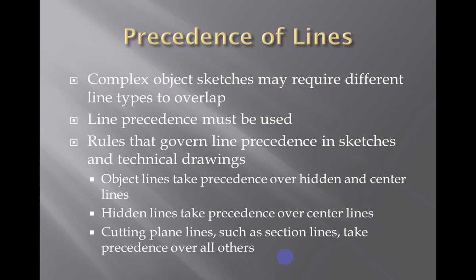There are some precedents. Sometimes you have an object line that needs to be on top of a hidden line, so obviously you can't show a solid line and a dotted line when they're supposed to go in the same exact spot. Here's some examples of what takes precedence whenever you have different lines in the same sketch in the same place.